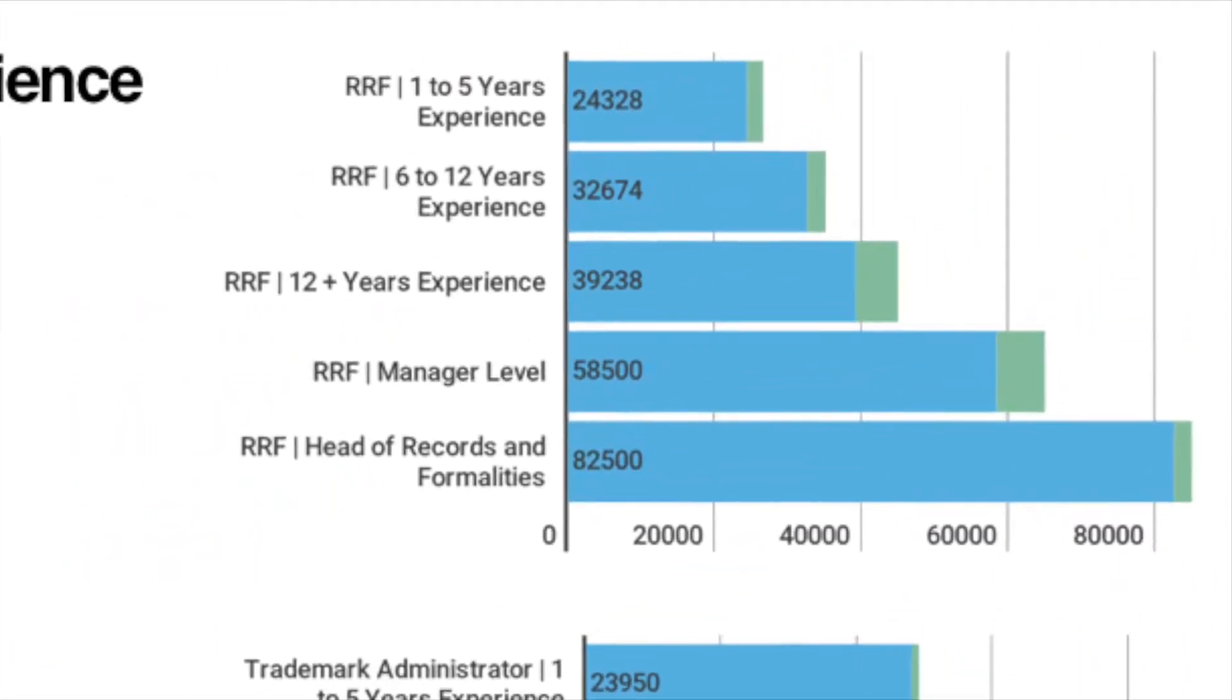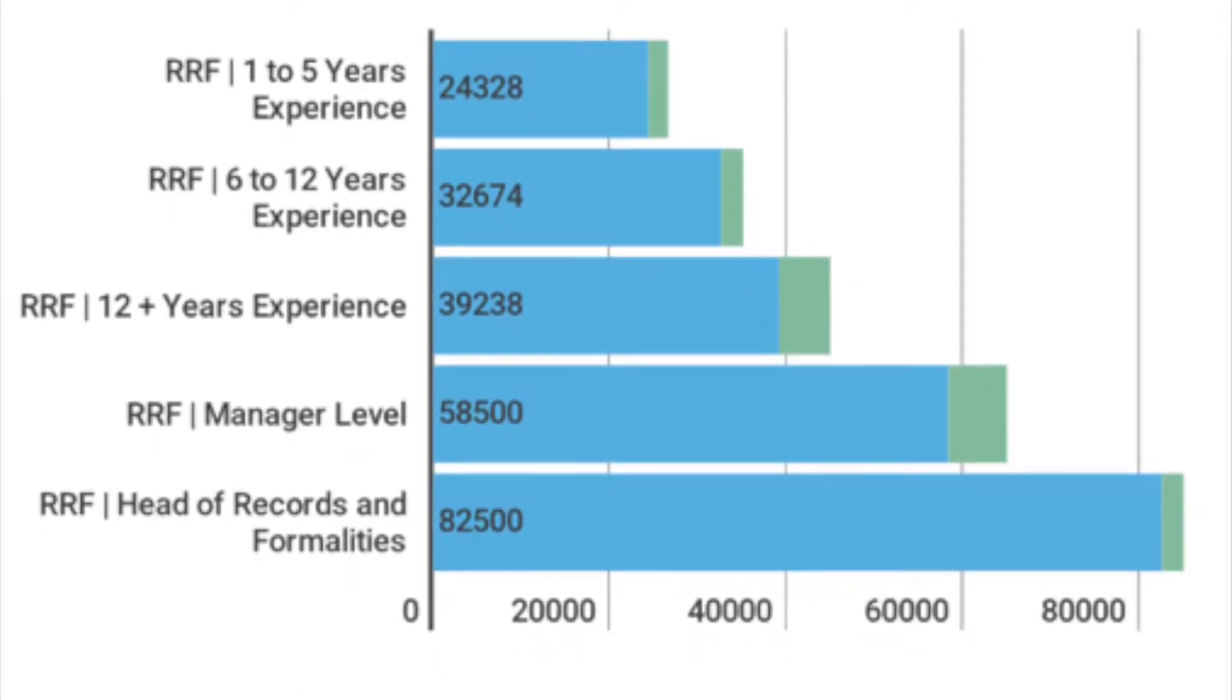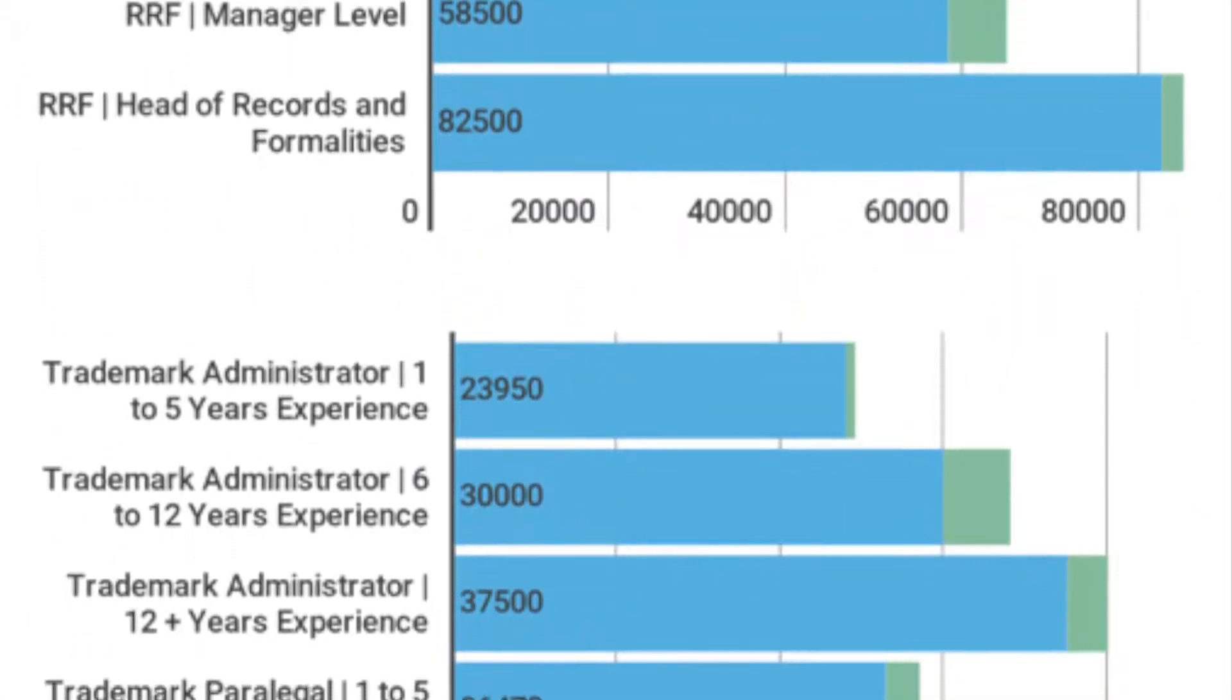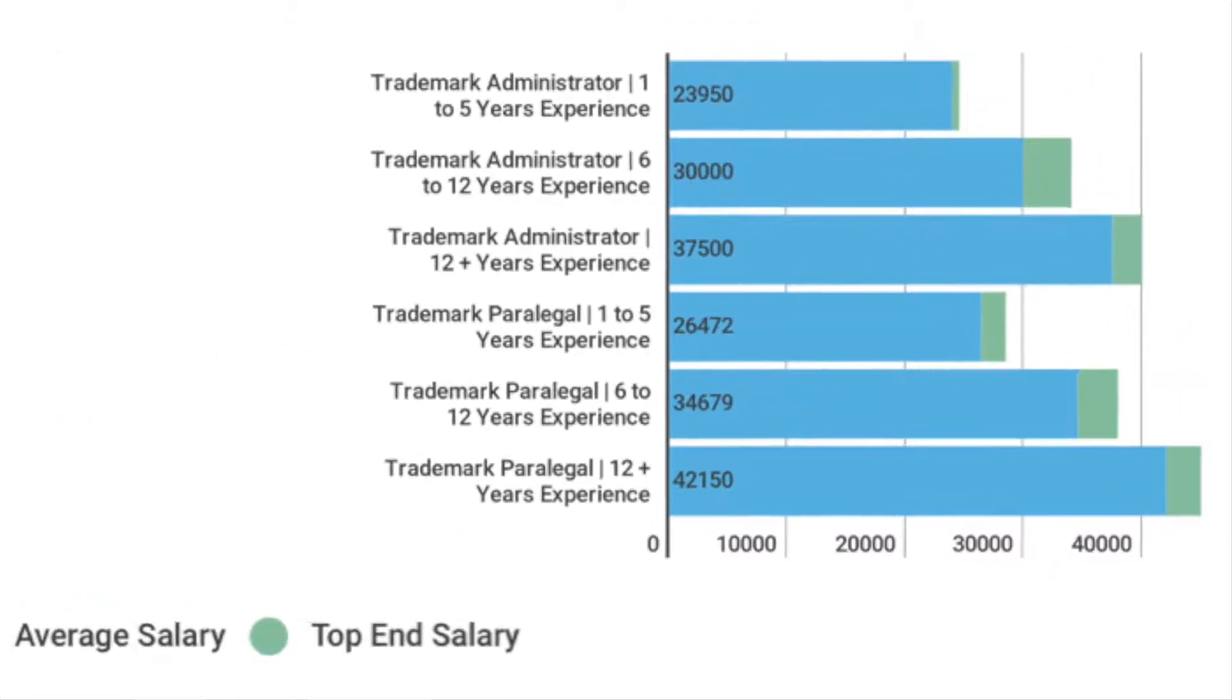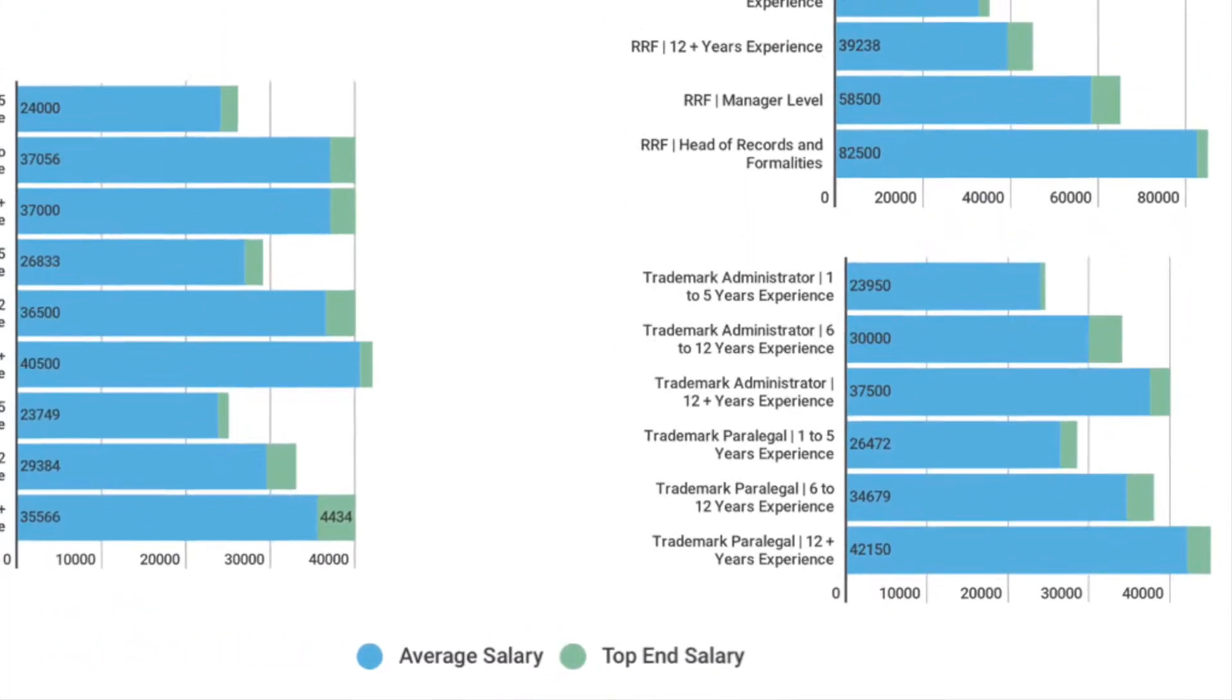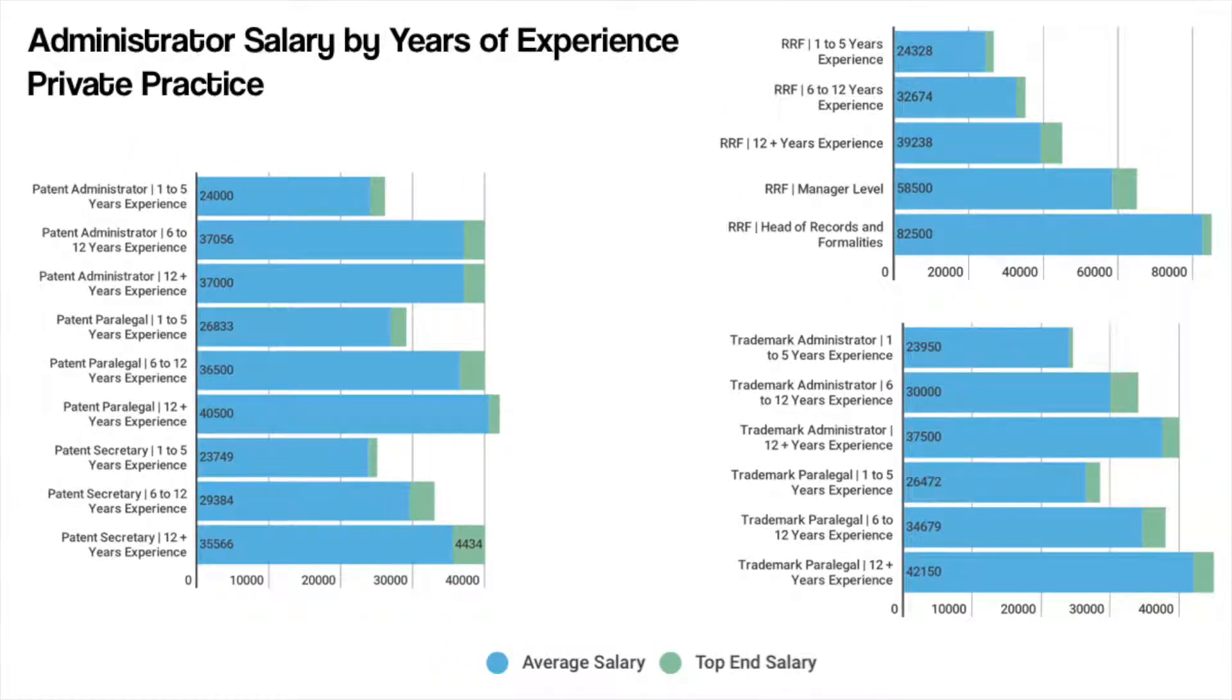Many IP employers we work with complain of a conveyor belt effect with administration staff, where experienced members of their team leave the business and are replaced with more junior hires. We would strongly advise firms to look at their benefits and flexibility to ensure the retention of valuable team members.